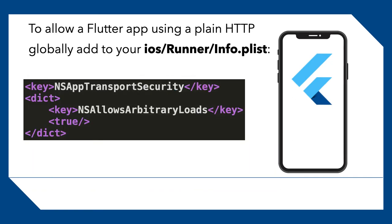The other way is to allow any plain HTTP requests for this app. In that case, you cannot publish this app — it won't succeed the publishing procedure because there should be a specific reason why you would use this globally.